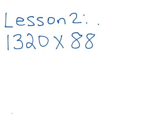Here's another example to show how we round the factors to estimate the product. So I have 1,320 times 88. If I wanted to estimate, and I don't need to find out the exact answer, I want to find the answer quickly.